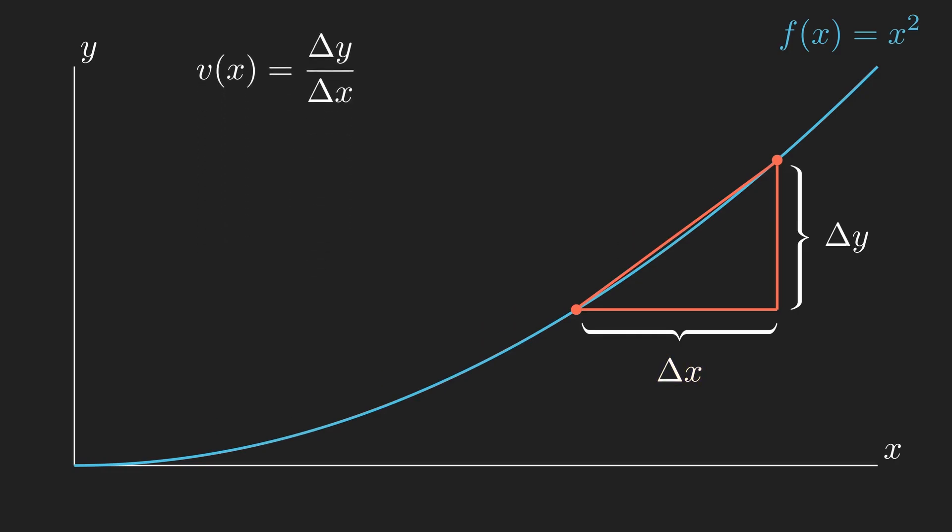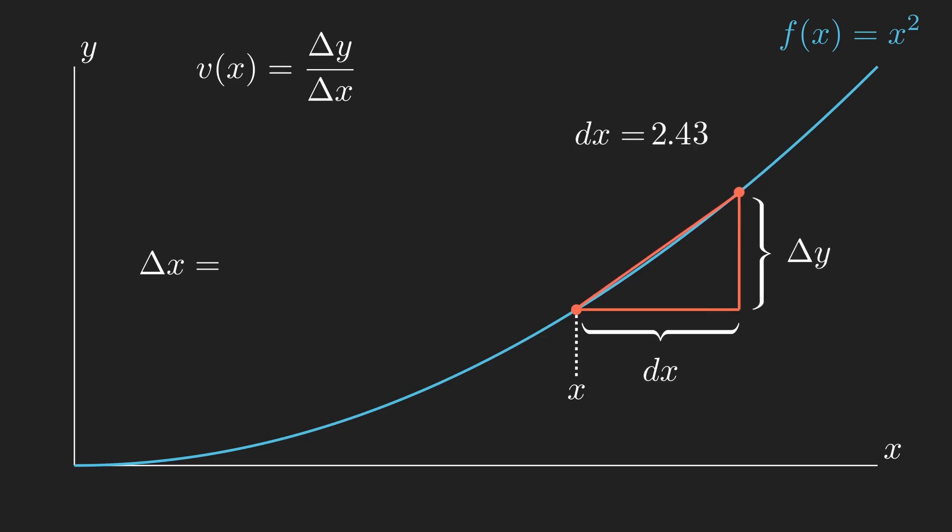Next, we need to work out what delta x and delta y are equal to. Let's start with delta x. Let's call the x coordinate that we start with x, and the difference between our two x coordinates, the difference of x, or dx. By changing dx, we can make our approximations of the velocity more or less precise.